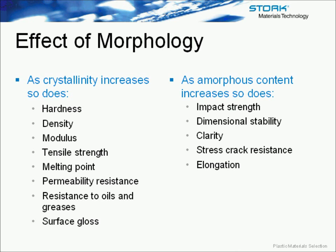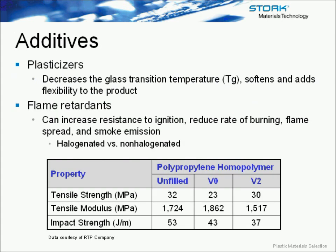These are generalizations, of course, and are dependent on the material you're looking at. One important thing to note is that crystallinity can also be further controlled to some extent during the molding process. This means that once an optimal molding process has been defined for a part and material, it needs to be tightly controlled to ensure that the same crystallinity is maintained from part to part.